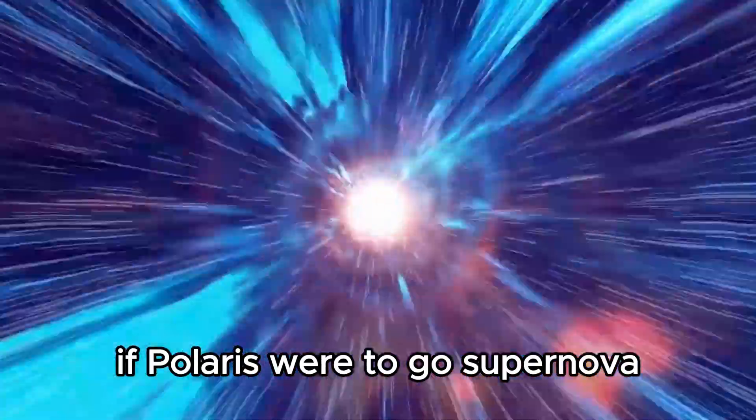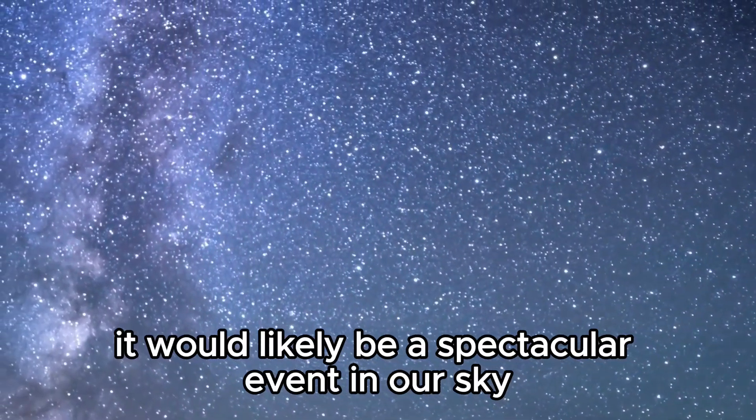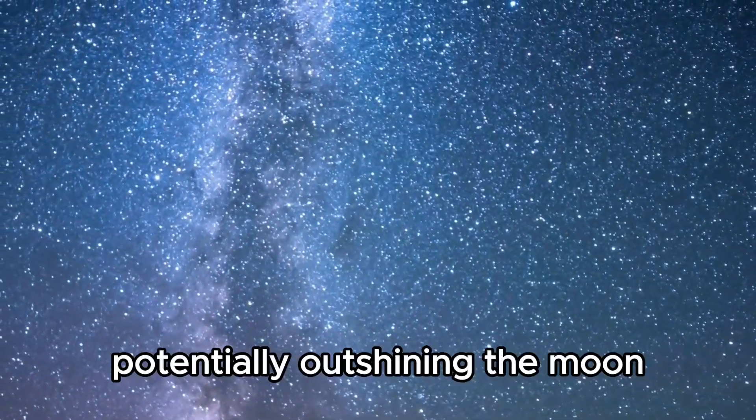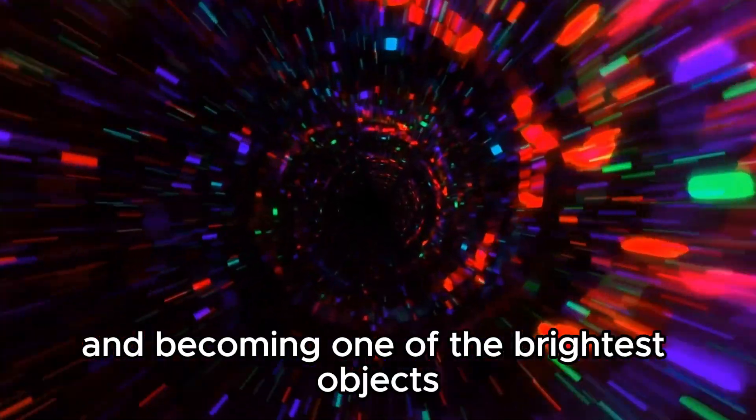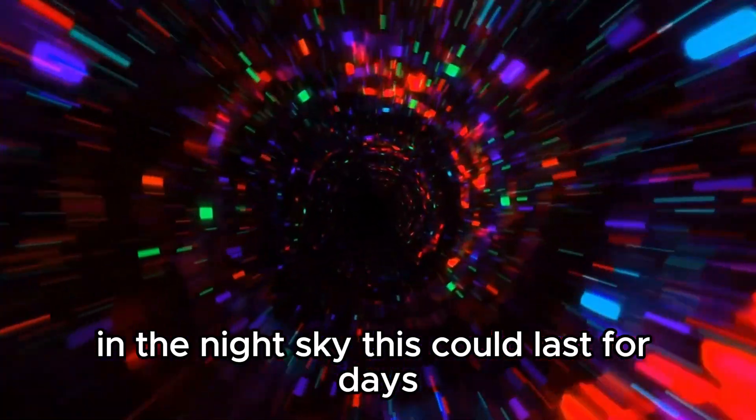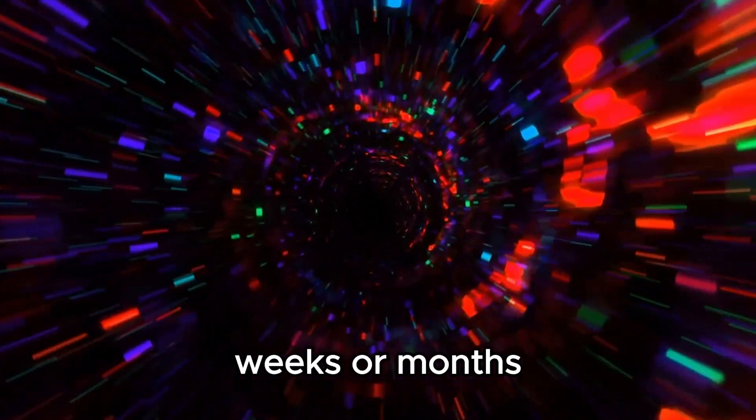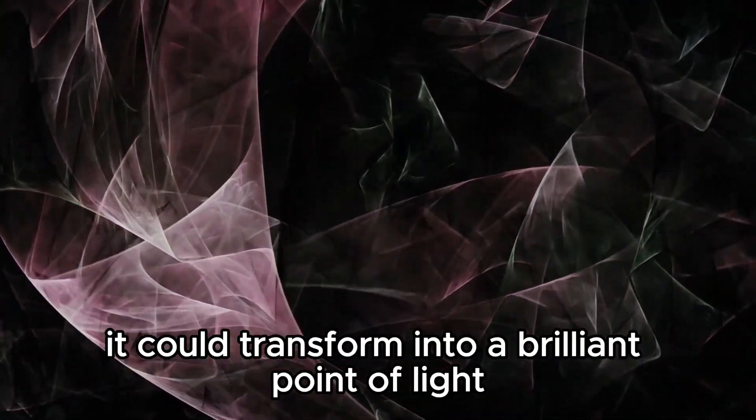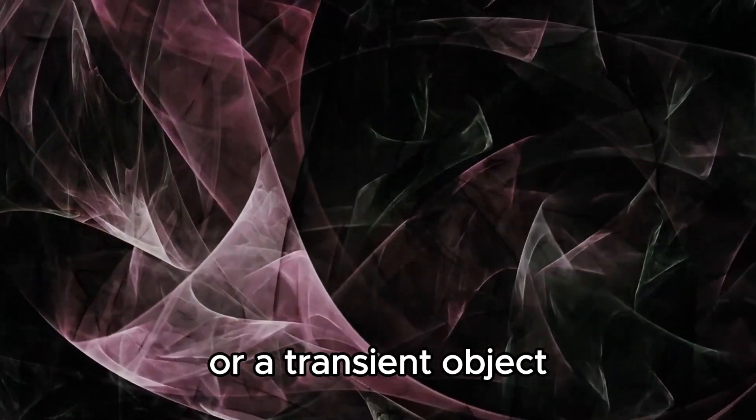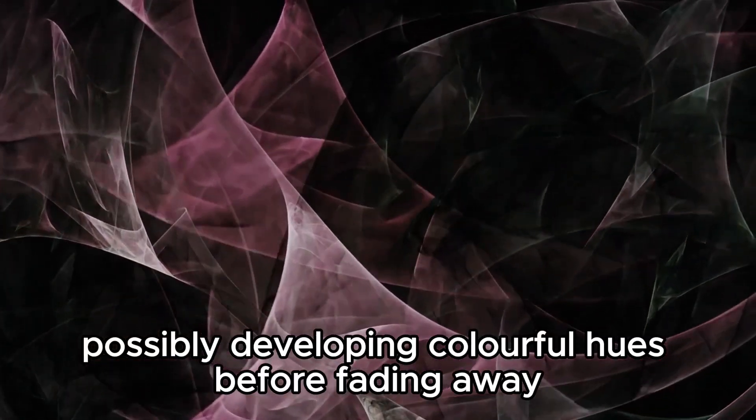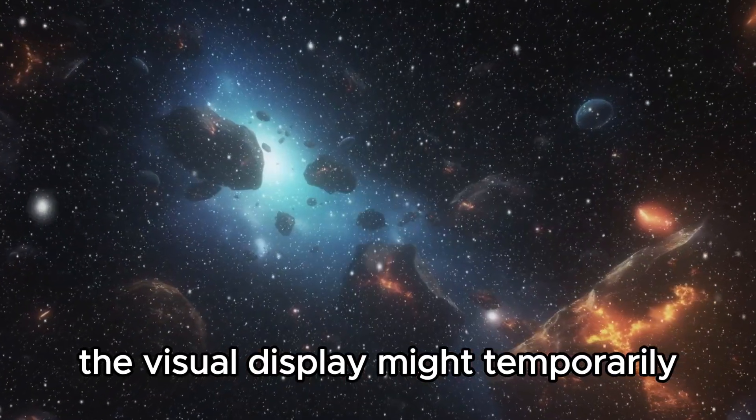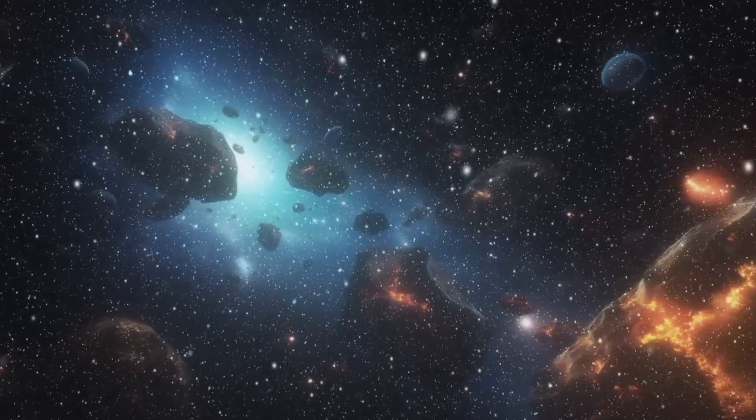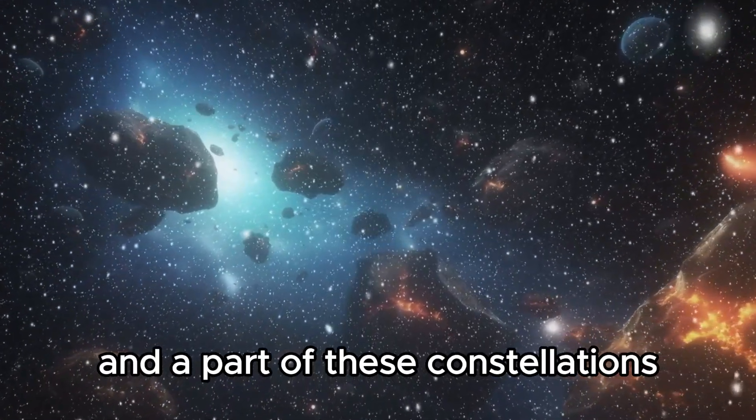If Polaris were to go supernova, it would likely be a spectacular event in our sky. The star would suddenly become incredibly bright, potentially outshining the moon and becoming one of the brightest objects in the night sky. This could last for days, weeks, or months. The star's appearance might change drastically. It could transform into a brilliant point of light or a transient object, possibly developing colorful hues before fading away. The visual display might temporarily alter our perception of the familiar pattern of the Big Dipper or Ursa Minor, as Polaris is the current North Star and a part of these constellations.